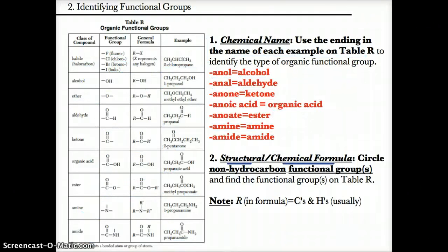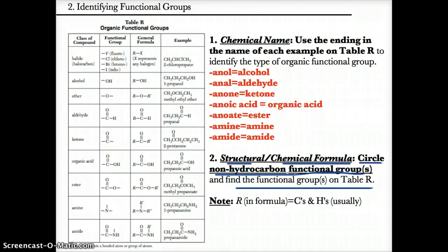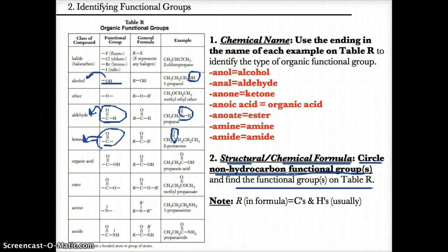For structural and chemical formulas, you just have to circle the non-hydrocarbon functional group and then match it up to one of the functional groups on table R. For example, OH at the end tells you it's an alcohol. C double-bonded to O with H (CHO) at the end tells you it's an aldehyde. C double-bonded to O in the middle tells you it's a ketone.